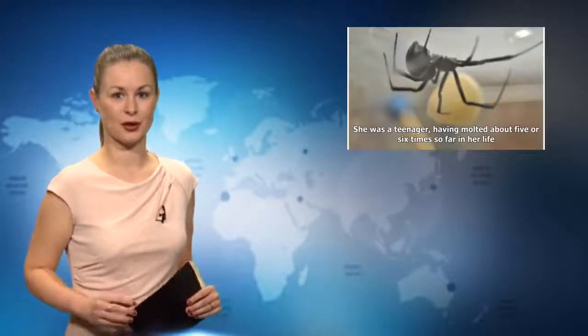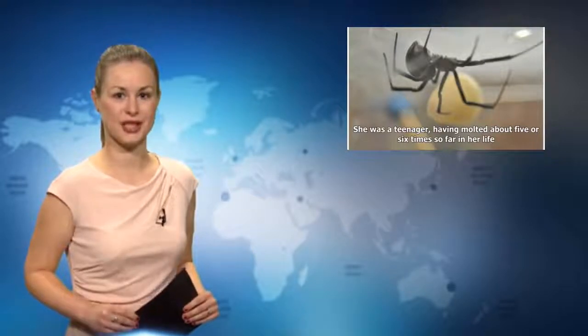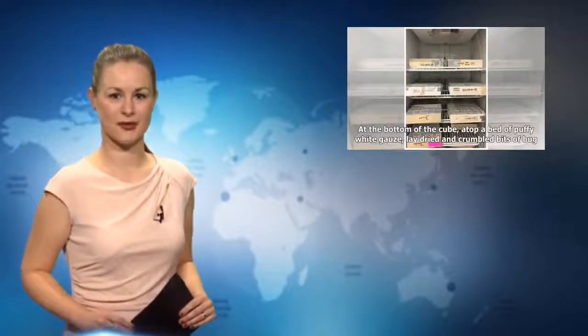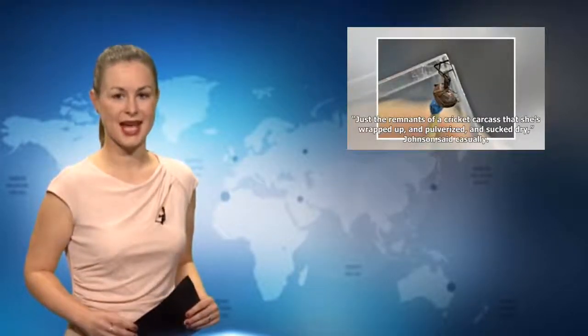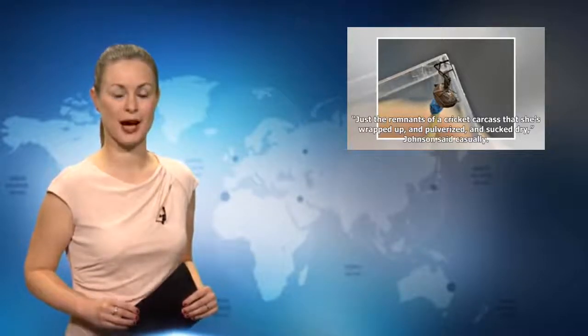She was a teenager, having molted about five or six times so far in her life. In another week or two, she'd be an adult. Her enormous abdomen was black, her legs a dark deep brown. At the bottom of the cube, atop a bed of puffy white cotton, lay dried and crumbled bits of bug. "Just the remnants of a cricket carcass that she's wrapped up and pulverized and sucked dry," Johnson said casually.